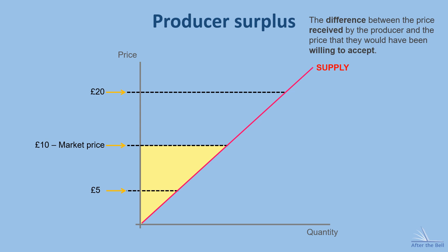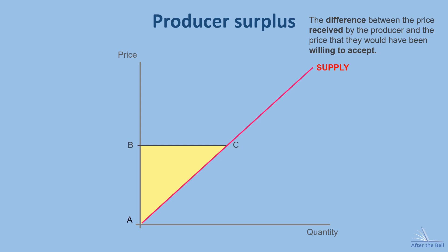And again we'd need to be able to show the impact of price changes on producer surplus. The producer surplus here is initially shown by the area of the triangle ABC at price B. A price increase to D means the area of the producer surplus increases, growing to the full area ADE. A price decrease to F means that the area of producer surplus shrinks and now only occupies the area AFG. So the impact of price changes will be the complete opposite to consumer surplus: as prices rise, producer surplus rises, and when prices fall, their surplus falls with it.